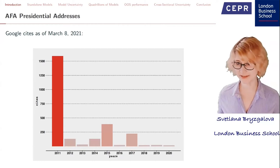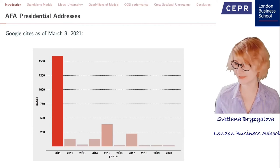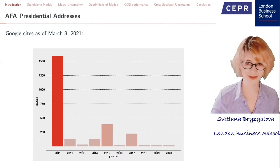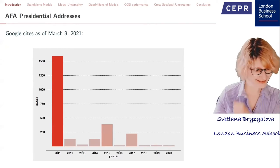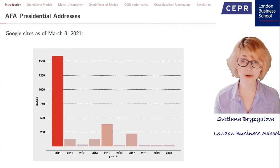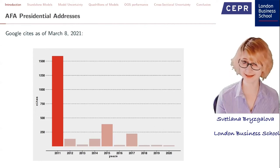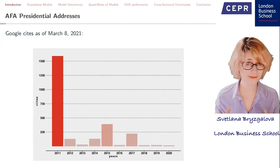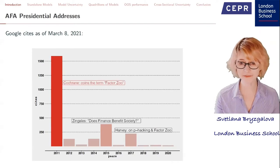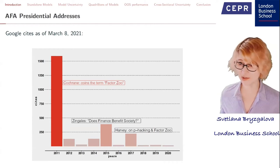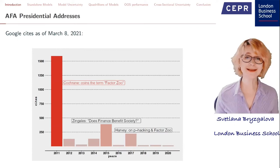Would anybody venture a guess who delivered the presidential address in 2011 and what was the topic? This was John Cochrane, who presented his 'Discount Rates' address and coined the term Factor Zoo. He was followed by Cam Harvey in 2017, who talked about the dangers of p-hacking and factor discovery. Together they get about 1,700 citations, impressive compared to all other topics. Luigi Zingales' address on whether finance benefits society managed to get less than 400 citations.